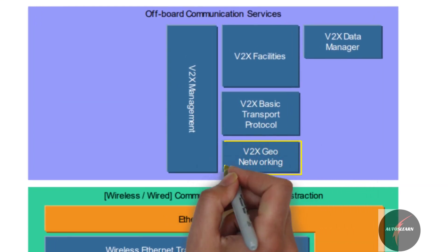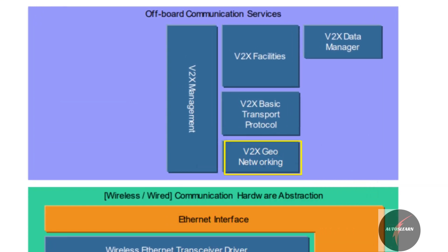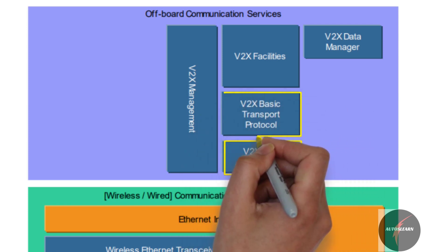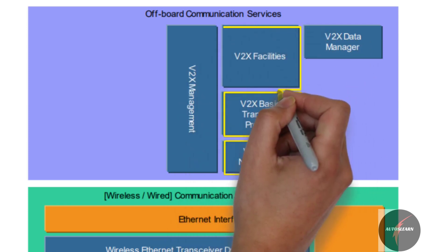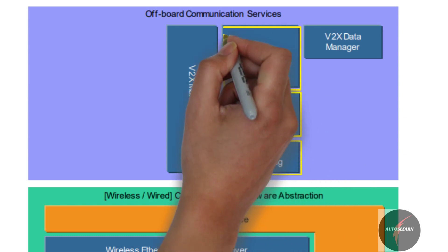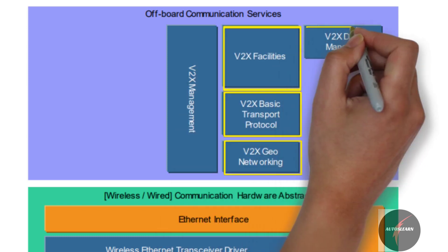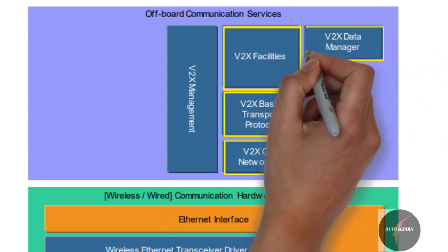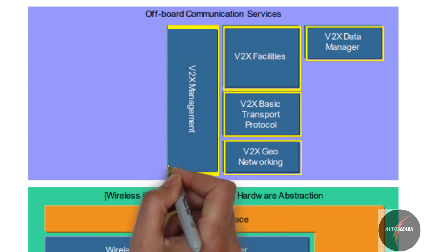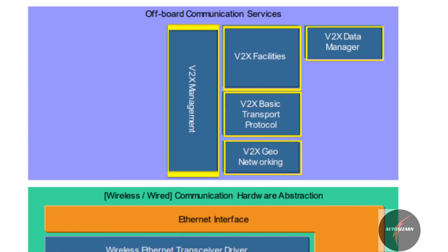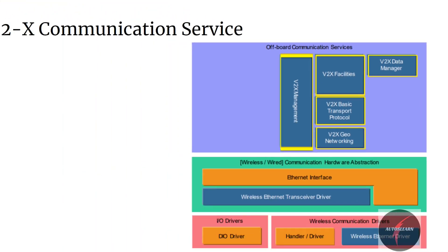The modules are: Vehicle-to-X Geo-Networking, Vehicle-to-X Basic Transport Protocol, Vehicle-to-X Facilities, Vehicle-to-X Data Manager, and lastly Vehicle-to-X Management. Let's briefly have a look into each one of them.